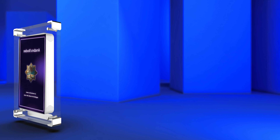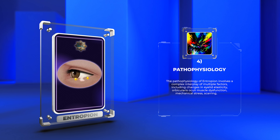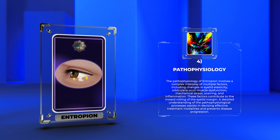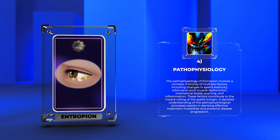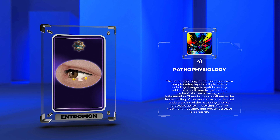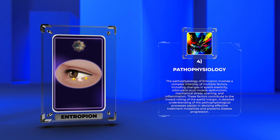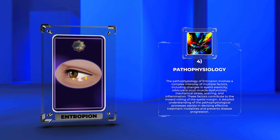The pathophysiology of entropion involves a complex interplay of multiple factors, including changes in eyelid elasticity, orbicularis oculi muscle dysfunction, mechanical stress, scarring, and inflammation. These factors contribute to the inward rolling of the eyelid margin. A detailed understanding of the pathophysiological processes assists in devising effective treatment modalities and prevents disease progression.